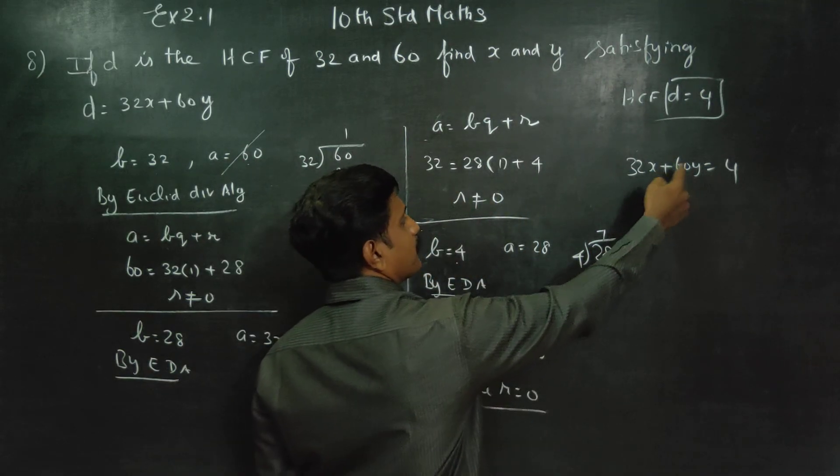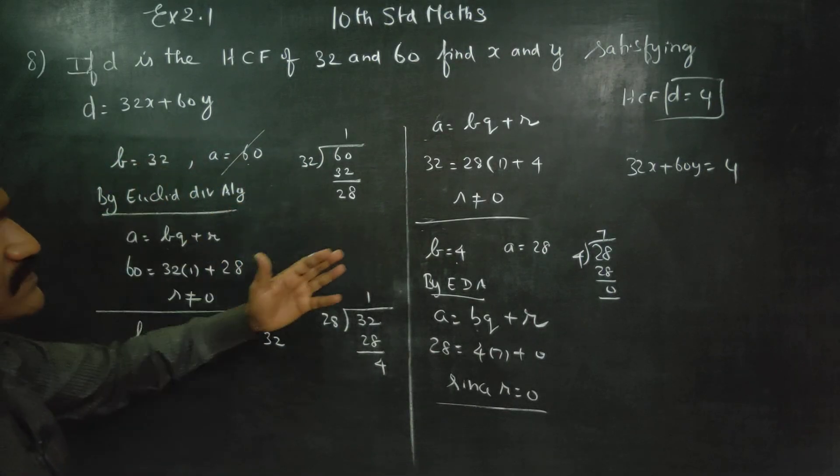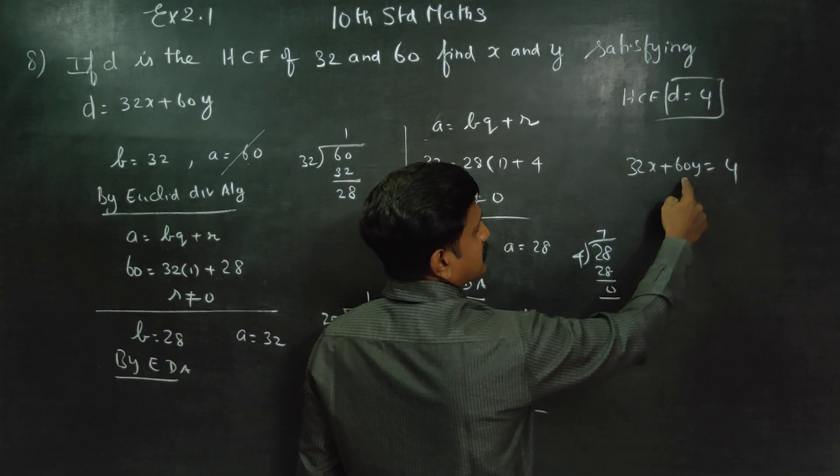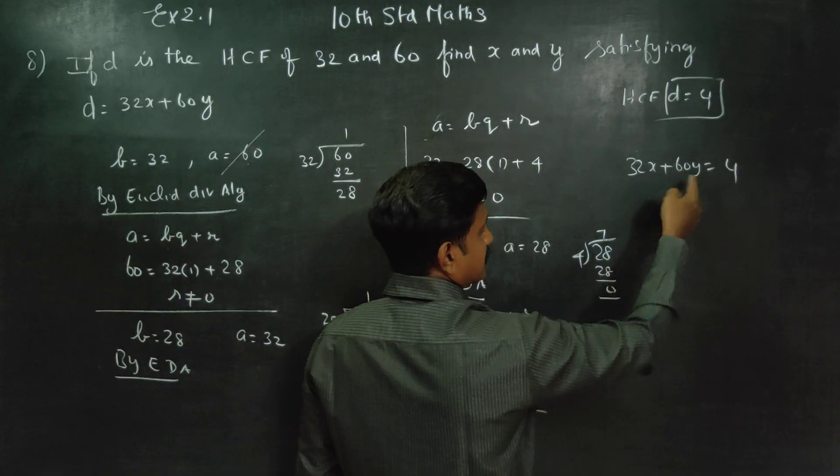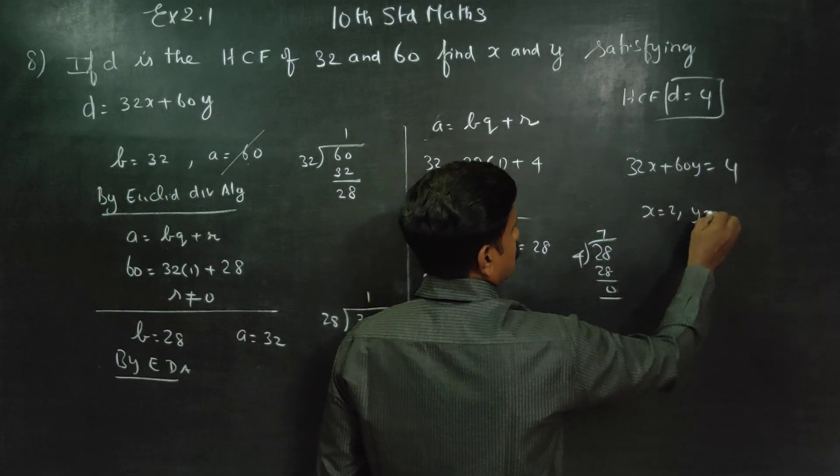Now, if you put the numbers, x and y values, you can satisfy the equation. x is equal to 2, y is equal to minus 1.